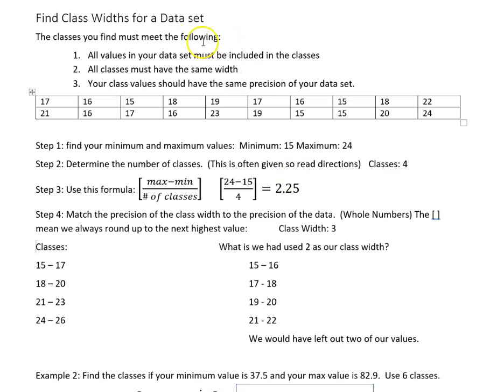So we want to make sure—this first thing up here—all the values are included in the classes that you come up with, and they all have to have the same width. That is, if I subtract any value along here I would have gotten 2, or any value on the right side over here I would have gotten 3 all the way up and down. That's making sure that they're consistently wide, all of our classes. And then they have the same precision—that is, we're dealing with whole numbers, and so we have whole numbers in our classes.